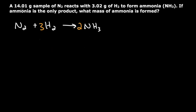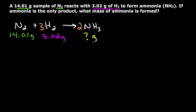Now that I have a balanced reaction, I'm going to take the 14.01 grams of N2 and 3.02 grams of H2 and put those values in. I need to find the mass of NH3, so I'll put a question mark with a G for grams. In this problem, we have two different reactants with two different amounts, and we don't know which one is in excess and which one is the limiting reactant, so we have to figure that out.